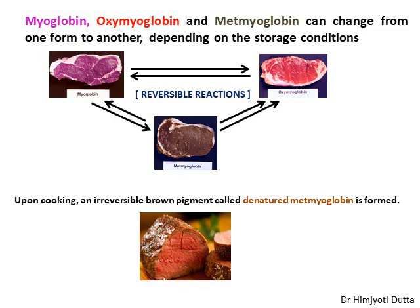However, when we cook the meat, it causes formation of a brown state of the pigment called denatured metmyoglobin, which causes brown coloration. This reaction is not reversible — once denatured metmyoglobin is formed during cooking, it cannot go back to the myoglobin, oxymyoglobin, or metmyoglobin stages.